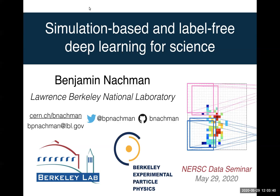I'll briefly introduce for the past couple of minutes while people are still filtering in. Many of you probably know Ben Nachman, who's in the physics division here at Berkeley Lab. For those who don't know Ben, he's on the ATLAS collaboration — an LHC particle physicist — but he's also made considerable contributions to deep learning for science, and was possibly the first person to apply convolutional neural networks in a particle physics context.